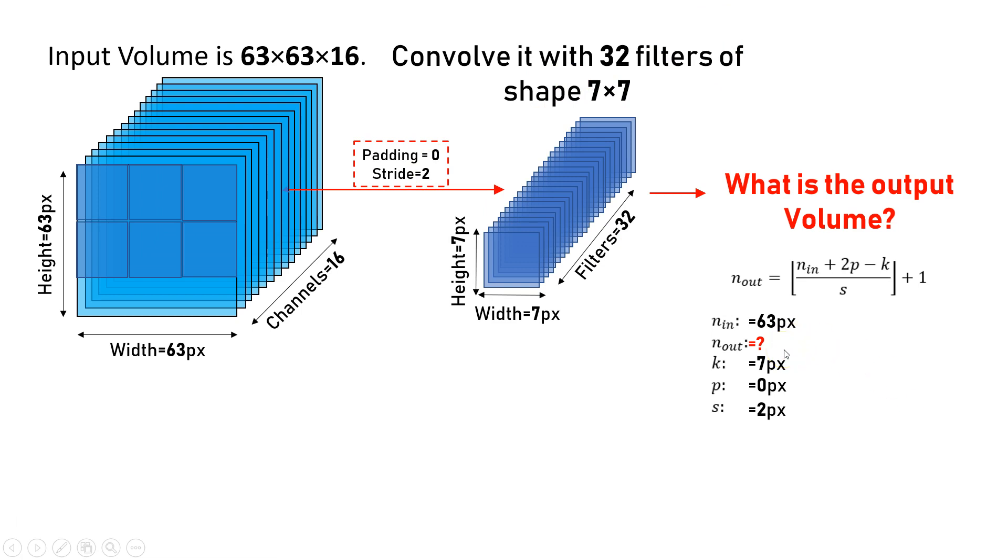Let's move the formula here and put the values for calculations. Input shape is 63 in height and 63 in width, padding 0, filter size is 7 pixels, and stride is 2. Yes, stride is 2.